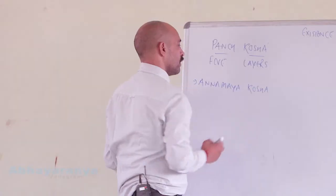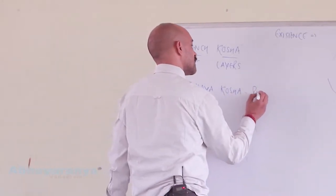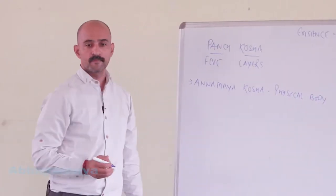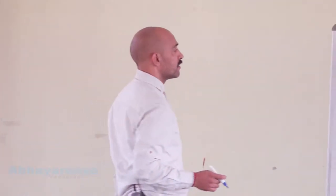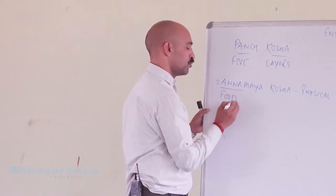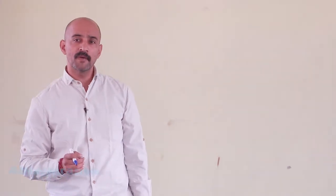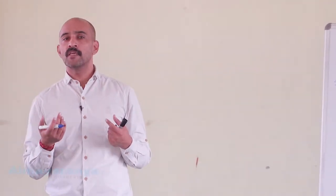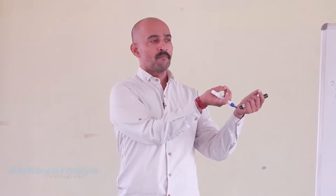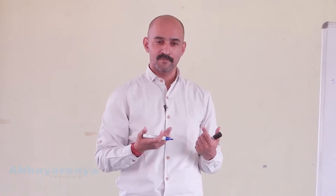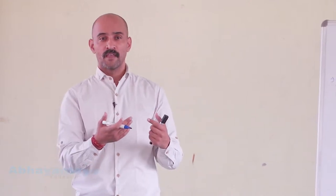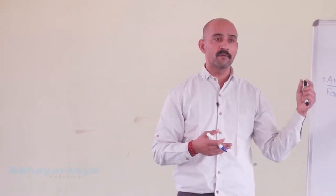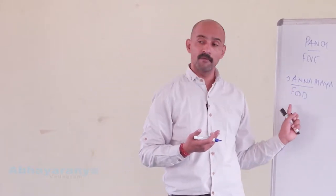Annamaya Kosha is our physical body — the physical layer of existence. Anna refers to food, meaning my physical body is made up of food — it is a food body. I came into existence from the sperm and ovum of my mother and father, which themselves came as the outcome of what they went on eating. So I took one part from my mother and one part from my father, and that is this Annamaya Kosha.